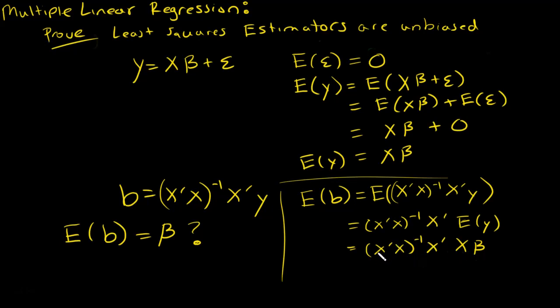Alright, now we're noticing that this x transpose x inverse is being multiplied by x transpose x. Very nice, that's basically they cancel. So it's the inverse times itself, so it cancels with itself by definition of what an inverse is. So this equals beta, that's all there is to it. We've proven that this relationship is true. This is an unbiased estimator, b is an unbiased estimator of beta.